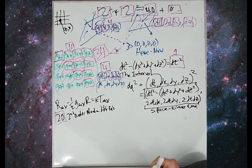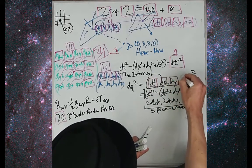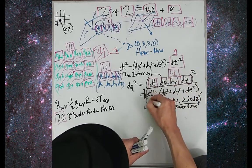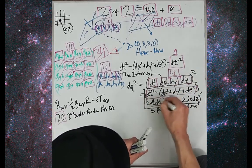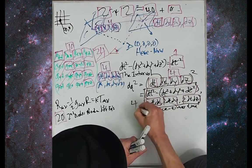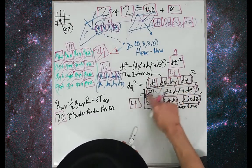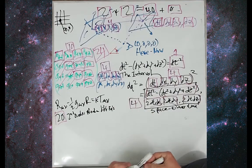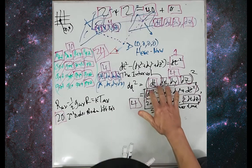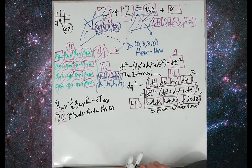And that equals dt squared minus dx squared plus dy squared plus dz squared and then 2 dt dx, 2 dt dy, 2 dt dz. So this part here is the interval, and this part here I call space-times-time.